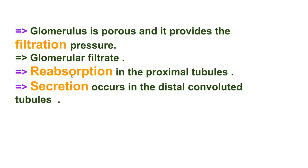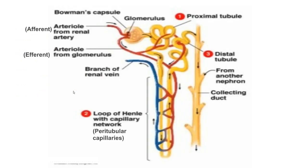The distal tubular epithelium of the nephron secretes substances into the lumen — mainly ions, acids, drugs, and toxins. So the filtrate is now composed mainly of waste materials, especially urea, which is why it is known as urine.